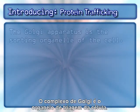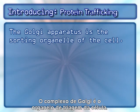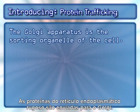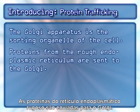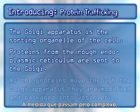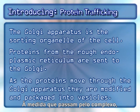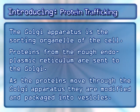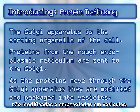The Golgi apparatus is the sorting organelle of the cell. Proteins from the rough endoplasmic reticulum are sent to the Golgi. As the proteins move through the Golgi apparatus, they are modified and packaged into vesicles.